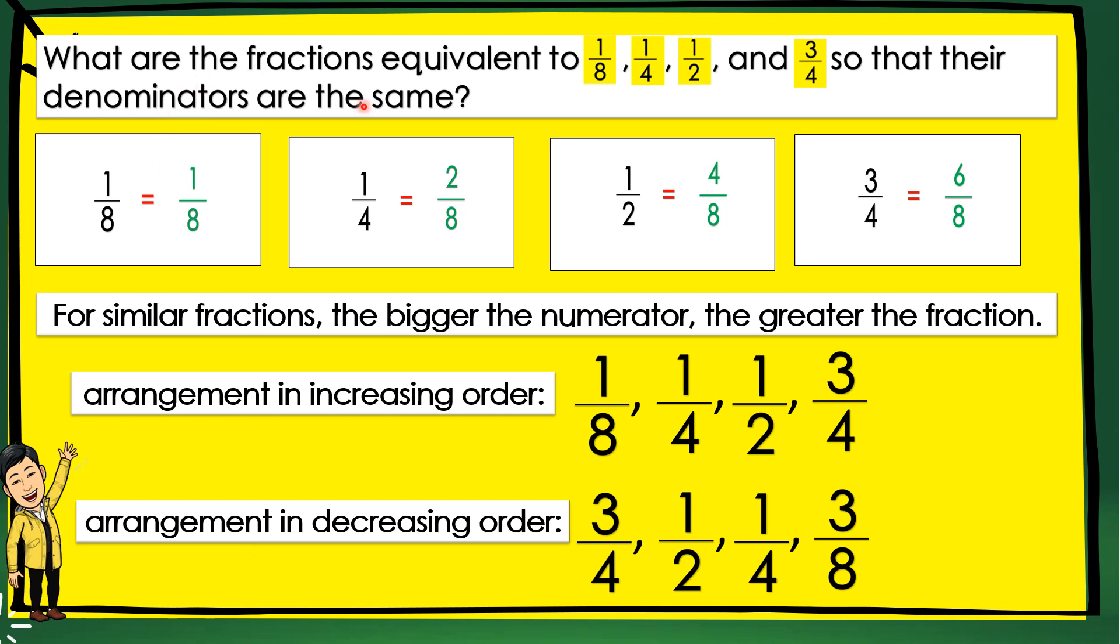Therefore, what are the fractions equivalent to 1/8, 1/4, 1/2, and 3/4, so that their denominators are the same? 1/8 is equal to 1/8. 1/4 is equal to 2/8. 1/2 is equal to 4/8.